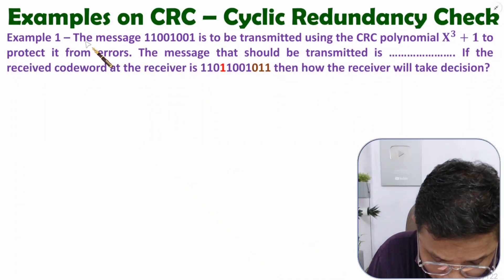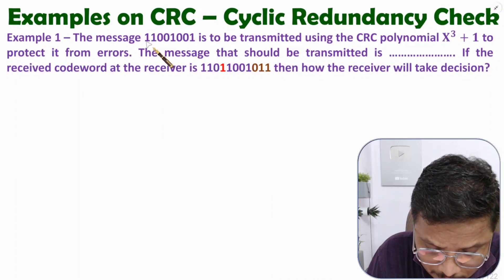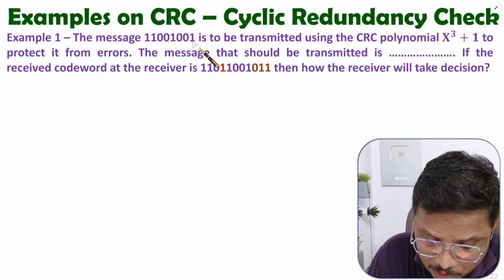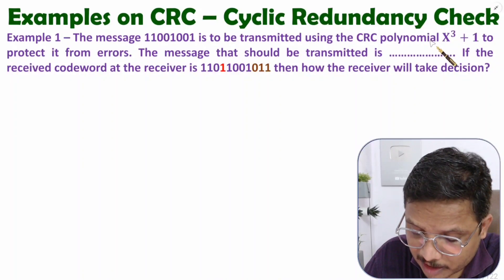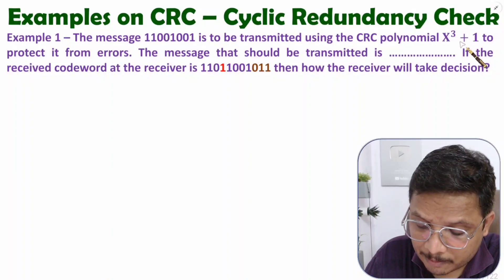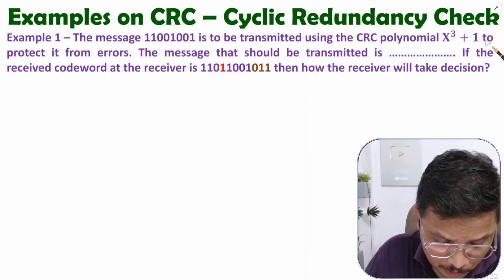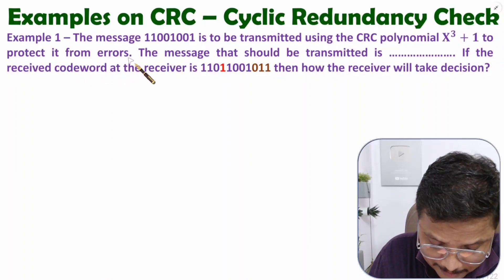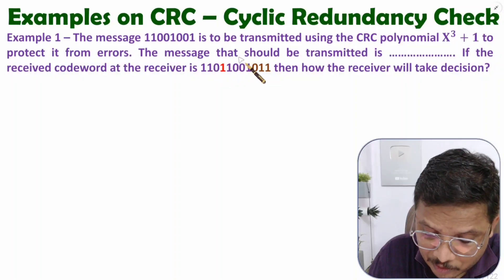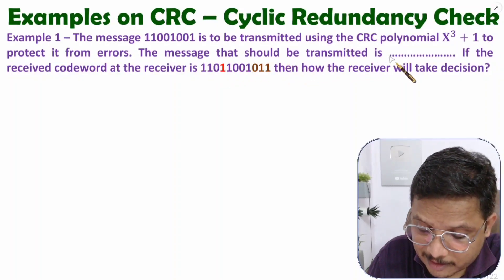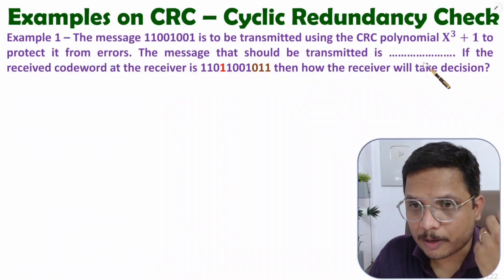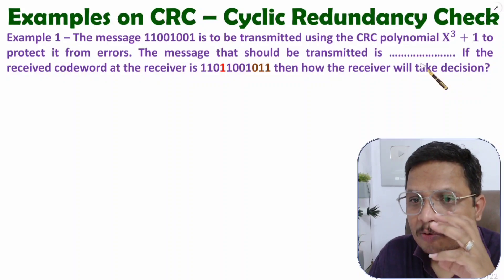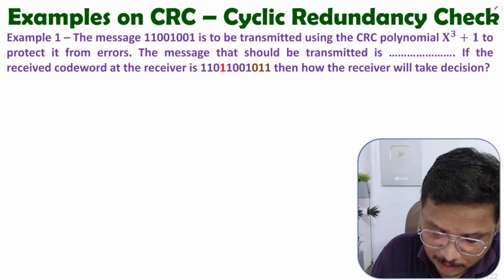The question is: the message 11001001 is to be transmitted using CRC polynomial x³ + 1, to protect it from errors. The message that should be transmitted is — first of all we need to identify what is the code word. Let me explain how to find the code word.